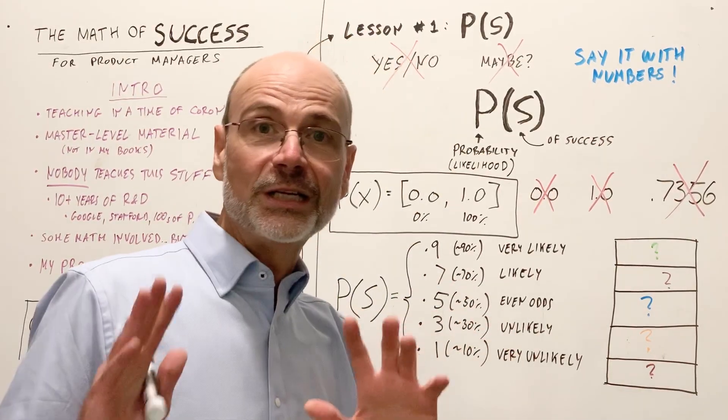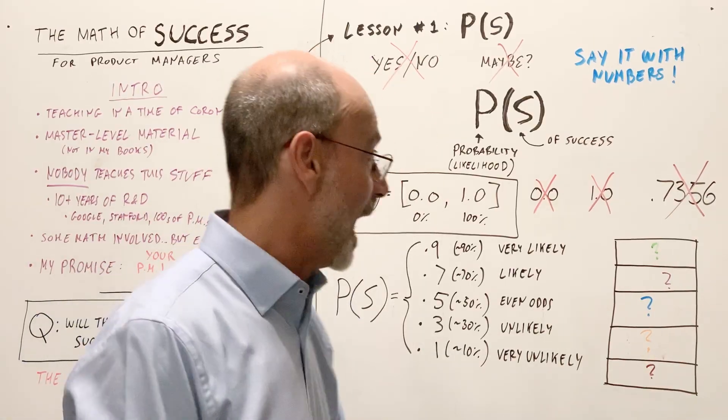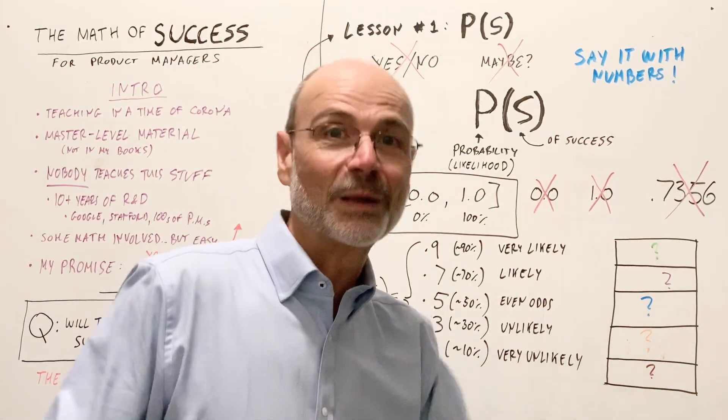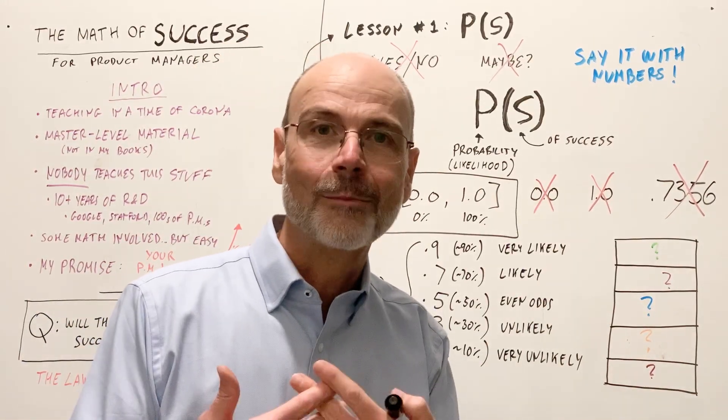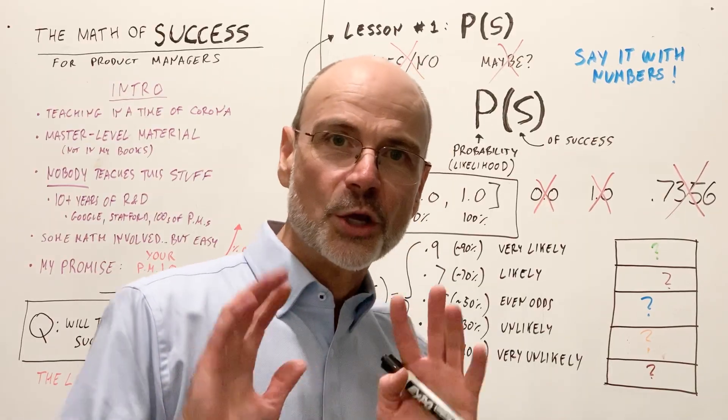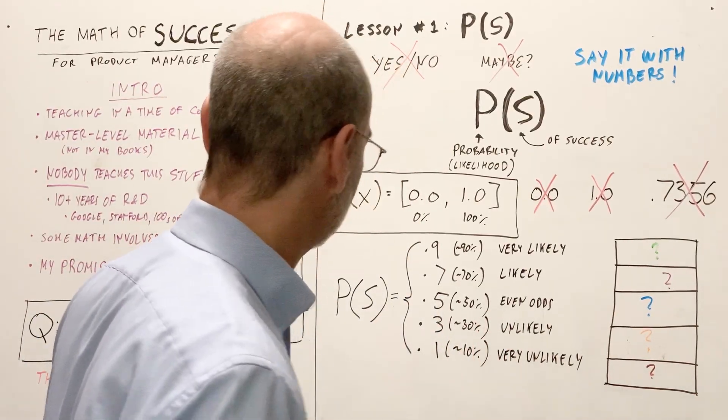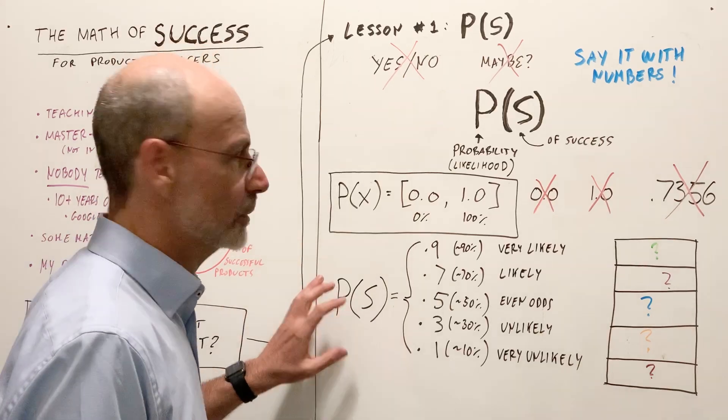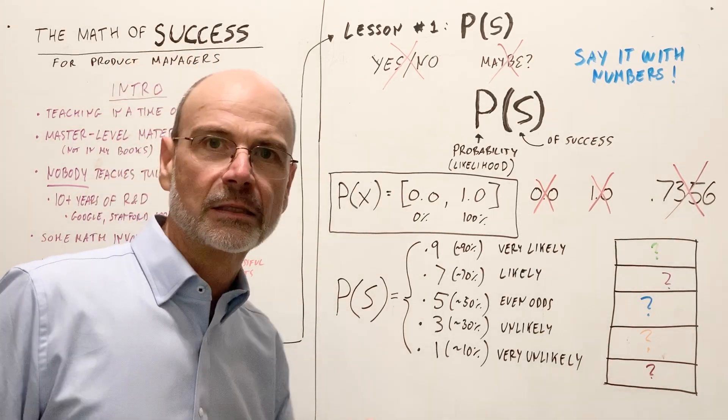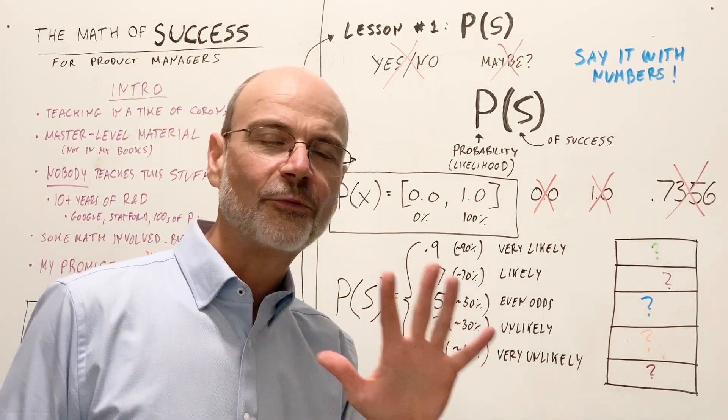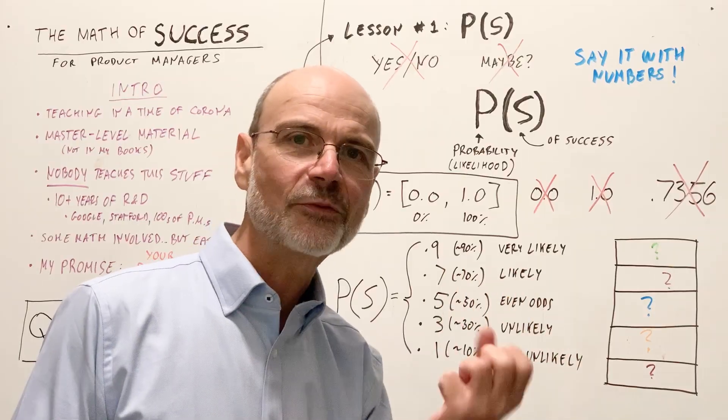So here we come to my first simplification and the first thing that nobody teaches you. And I've developed it over years of teaching this material because I have no trouble dealing with numbers like this, but they're ridiculous and they also complicate things. So here's the first big takeaway from this lesson. P of S, probability of success, is one of five numbers, one of five buckets.